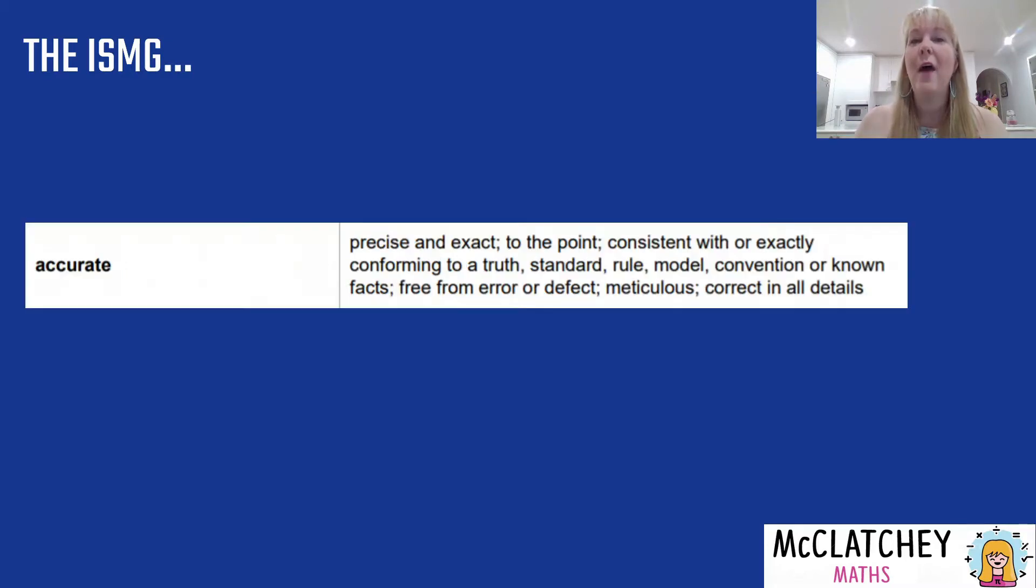Let's talk quickly about what accurate means. It means precise and exact, to the point, consistent, exactly conforming to the truth and a standard. In other words, it's free from errors and free from mistakes.